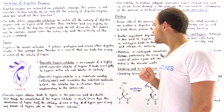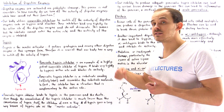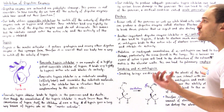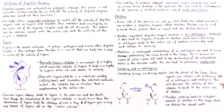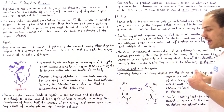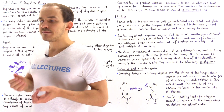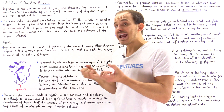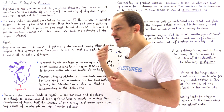Since we're on the topic of emphysema, let's talk about how smoking can lead to emphysema and what it does to alpha-1 antitrypsin. When smoking, a large number of oxidizing agents are created, and when we inhale that smoke, all these oxidizing agents...